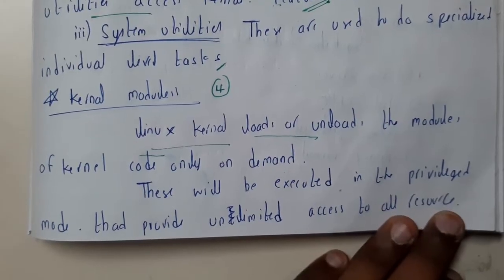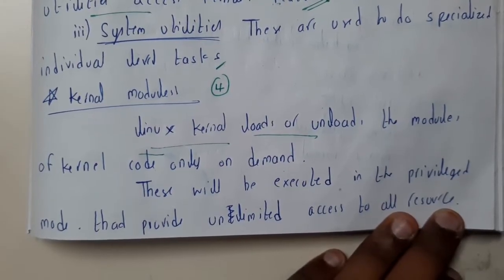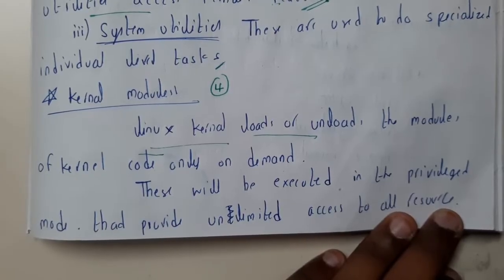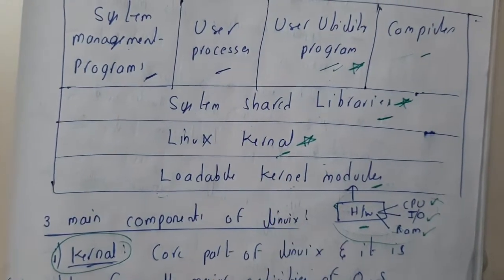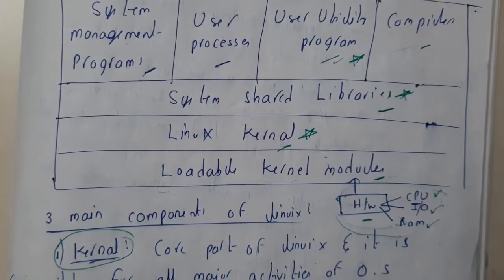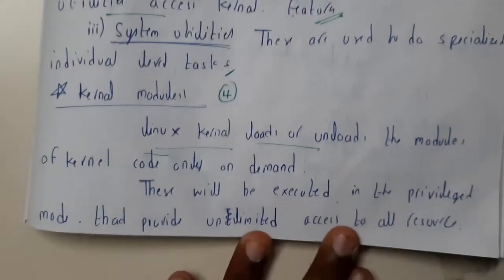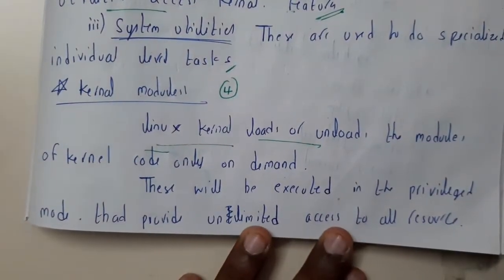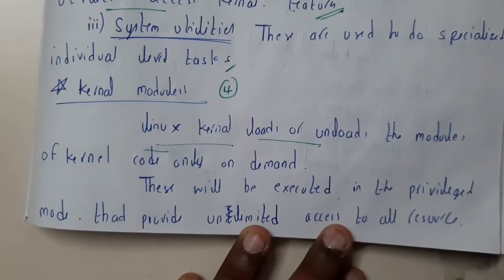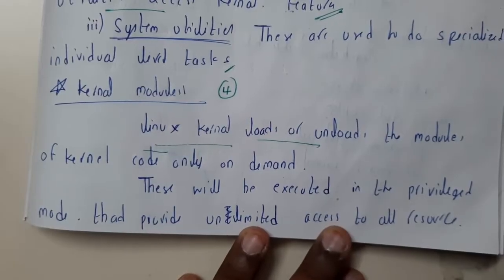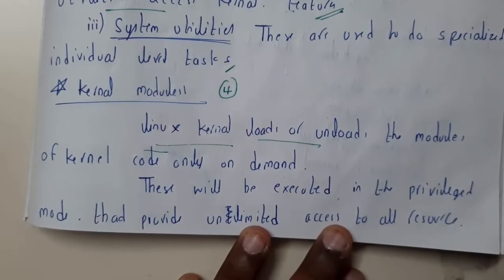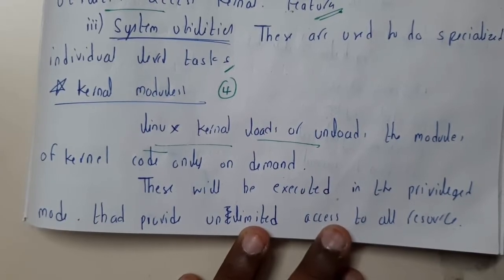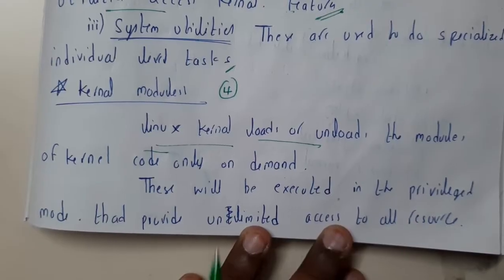Hello guys, we are back with our next tutorial. In this tutorial let us go through kernel modules. In the last tutorial we went through a basic introduction to the kernel and components of a system. In any operating system, the kernel is the most important part — it is the place where we store the most important function calls and everything. That is the reason why we call the kernel the heart of an operating system.